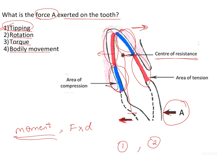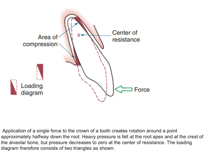This rotation takes place in the labio-lingual direction, which is why tipping is the type of tooth movement seen. The loading diagram for a tooth undergoing tipping movement shows a single force applied away from the center of resistance, with two triangles as the areas being loaded. Heavy pressure will be felt at the apex of the root moving labially and at the crest of the alveolar bone on the lingual side, as these two areas are the ones getting compressed. The tipping loading diagram has two triangles, meaning only half the area of the PDL is being used.